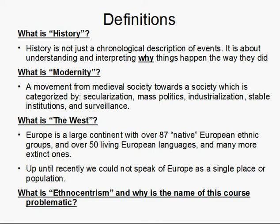Well, Europeans traditionally defined the West as being west of Jerusalem — I'll explain why later on. To them, everything west of that was considered the West. But what they really meant was Europe. And, as much as we can be tempted to do so, Europe is not a homogenous place. It's a large continent. There are over 87 native European ethnic groups and over 50 living European languages spoken even today. In earlier times, there were many more languages. Up until very recently — really the last 30 or 40 years — Europe could not be spoken of as a single place or a single population. It was a patchwork of countries with very different ideologies, ethnicities, languages, customs, and governments.